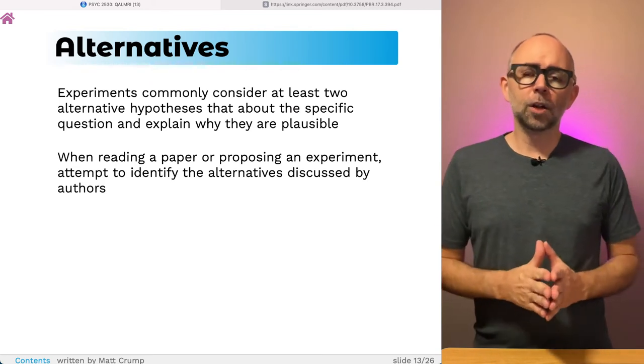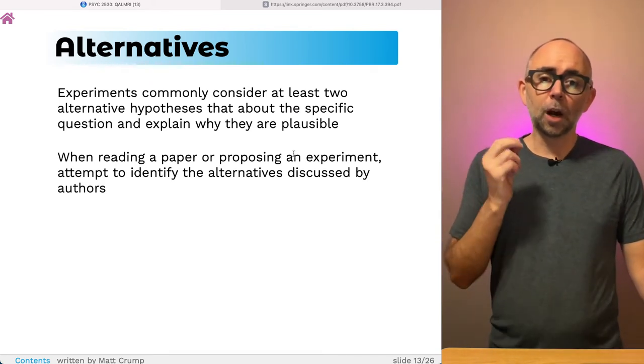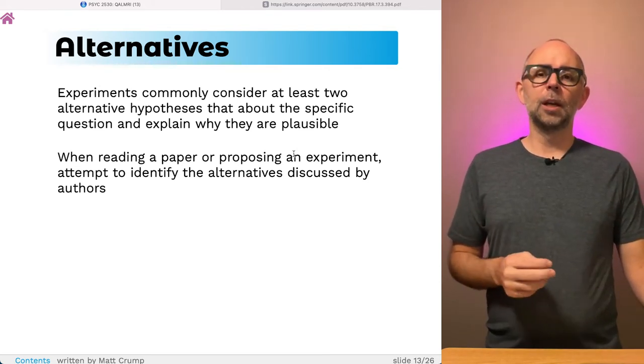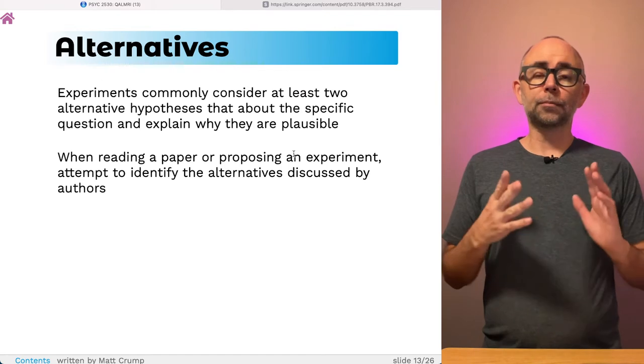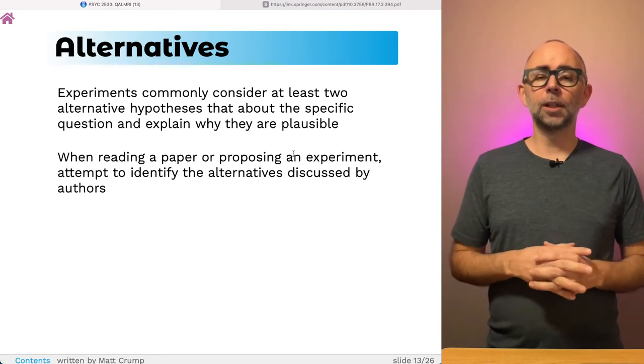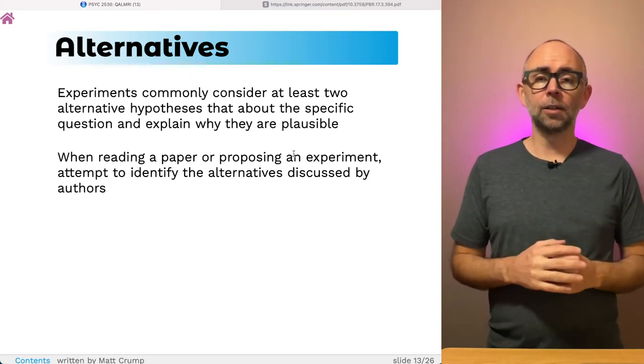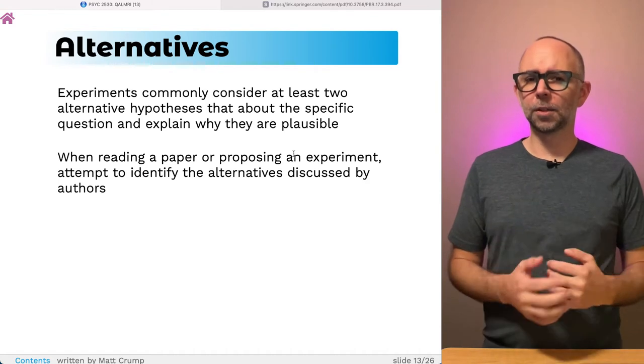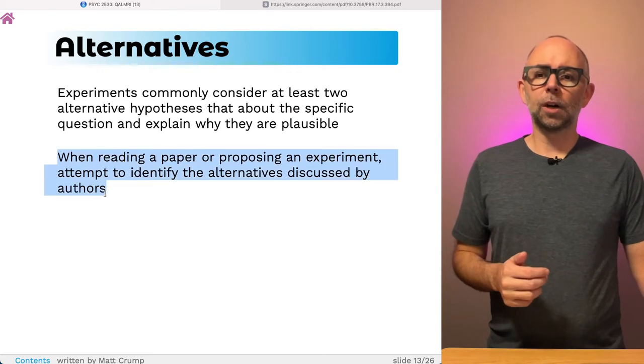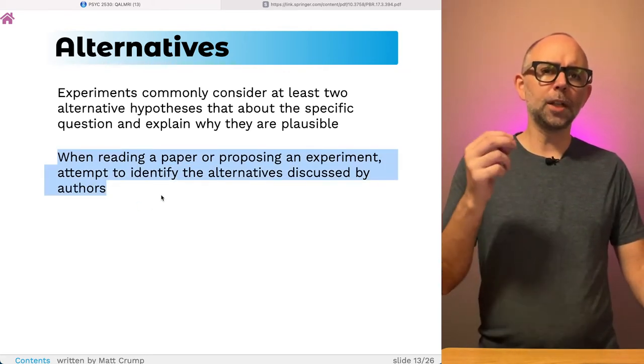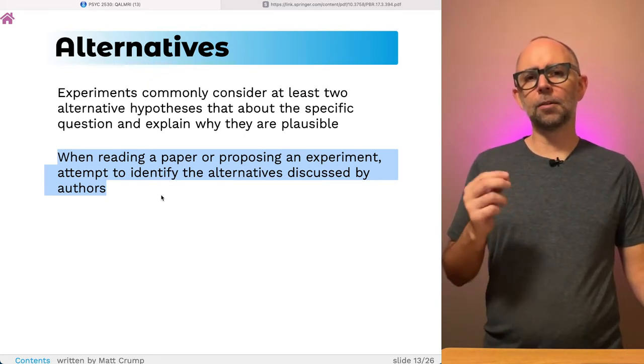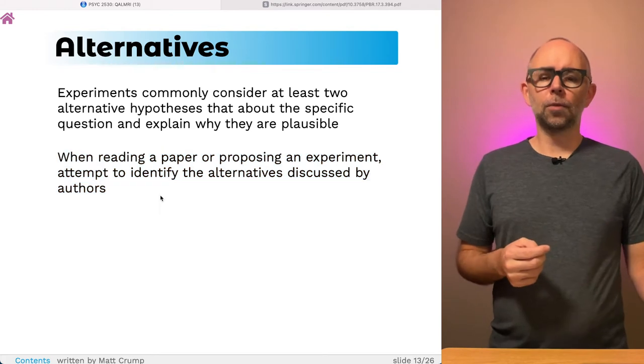Experiments, especially in research articles, commonly consider at least two alternative hypotheses. And this isn't always the case. Sometimes you'll find a research paper where they are only considering one alternative. But in general, especially in cognition, there's usually multiple possibilities for how something could happen. So when you're reading through a paper, try to identify what are the alternative ideas being discussed by the authors and how do they relate to the questions.